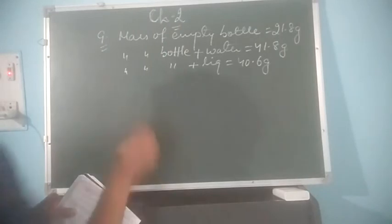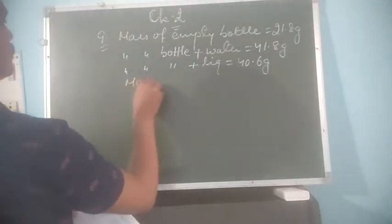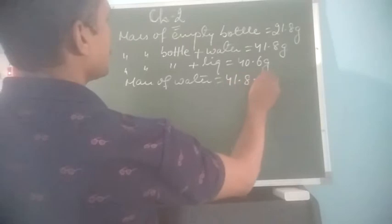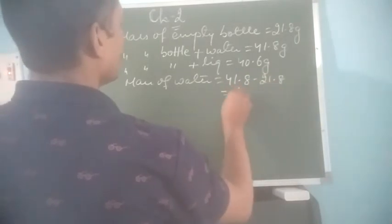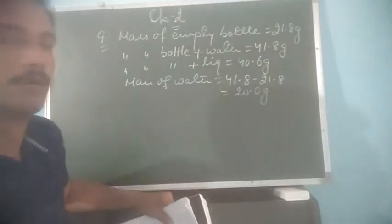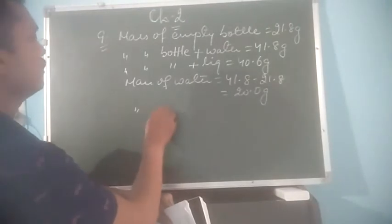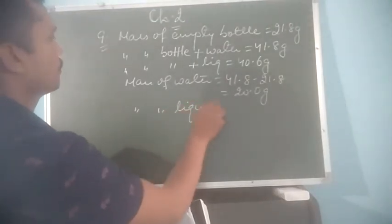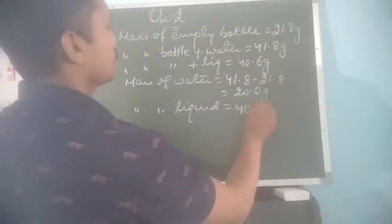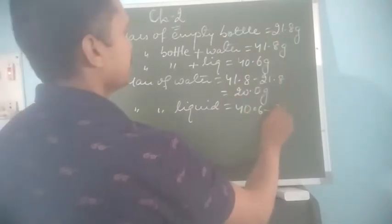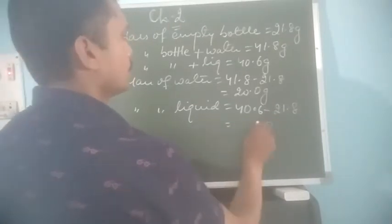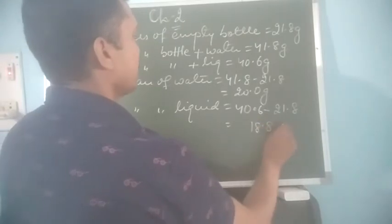Now using these three values we can find the mass of water in the bottle, which is 41.8 minus 21.8, equal to 20.0 gram. This is the mass of water filled. Similarly, find out mass of liquid filled: 40.6 minus 21.8, which comes to 18.8 gram.